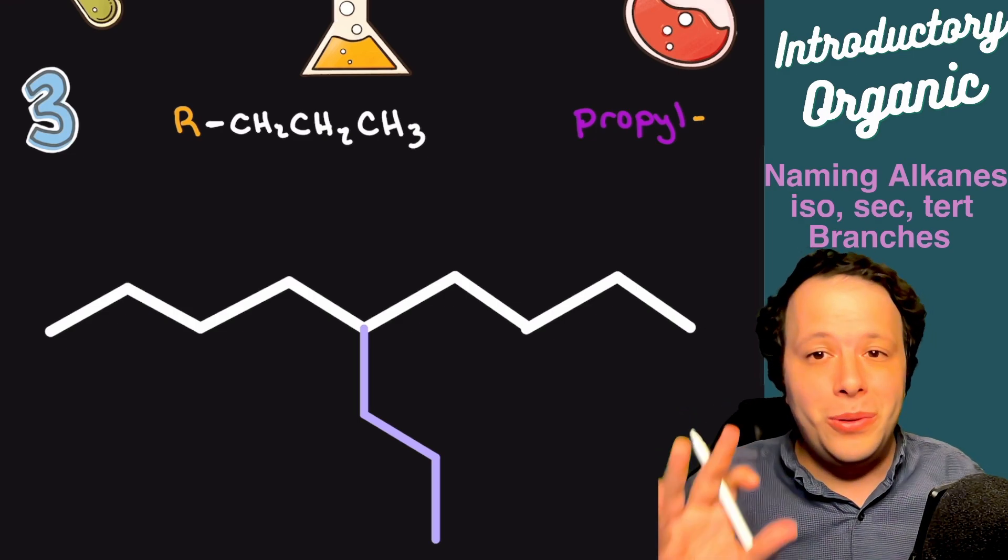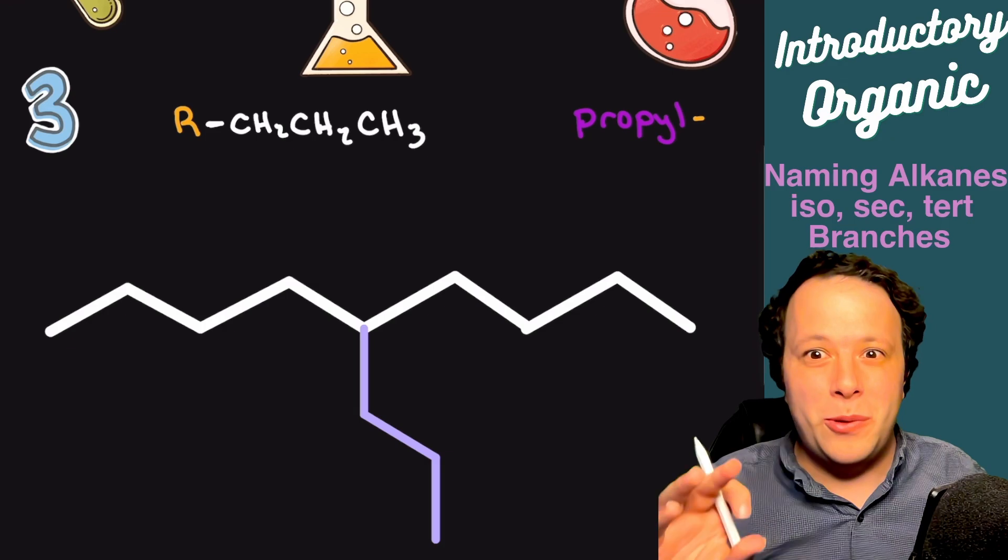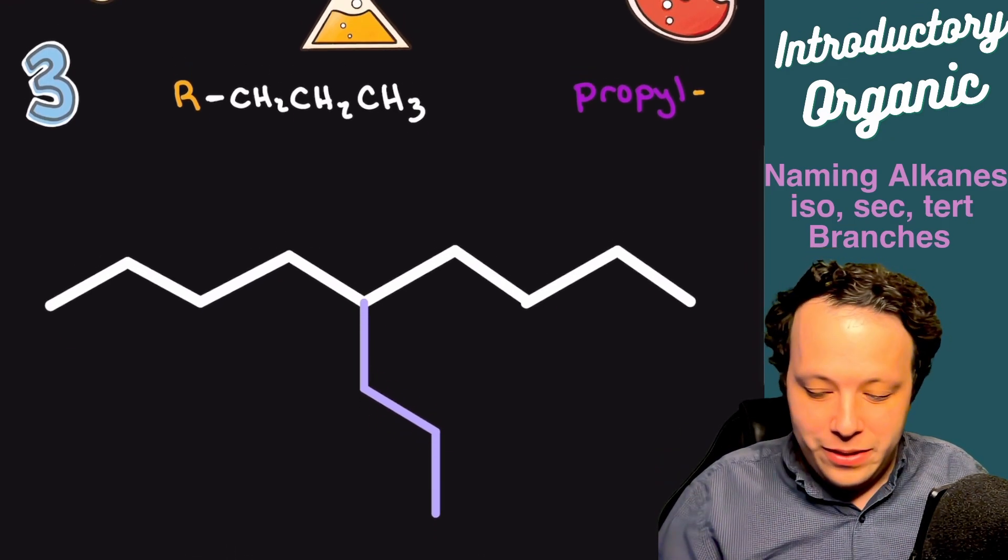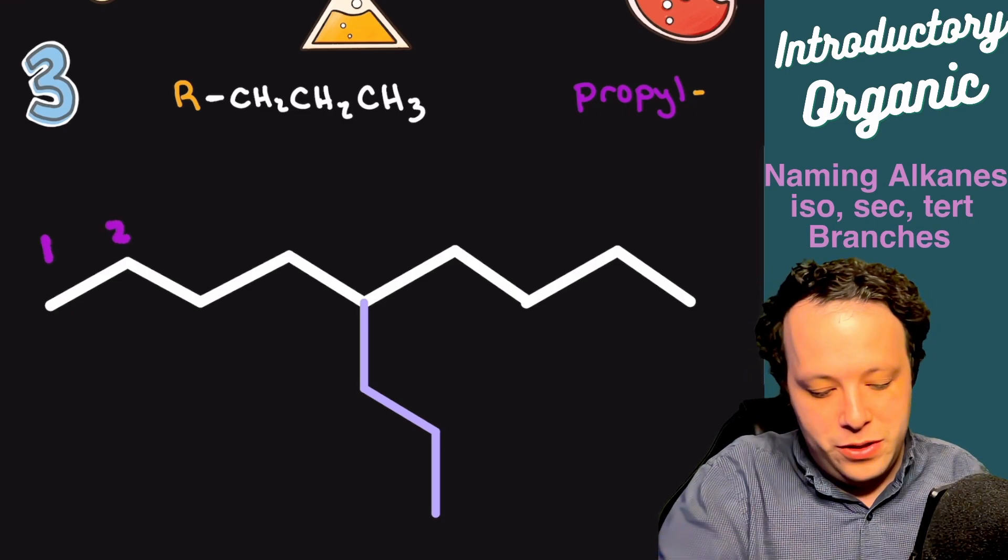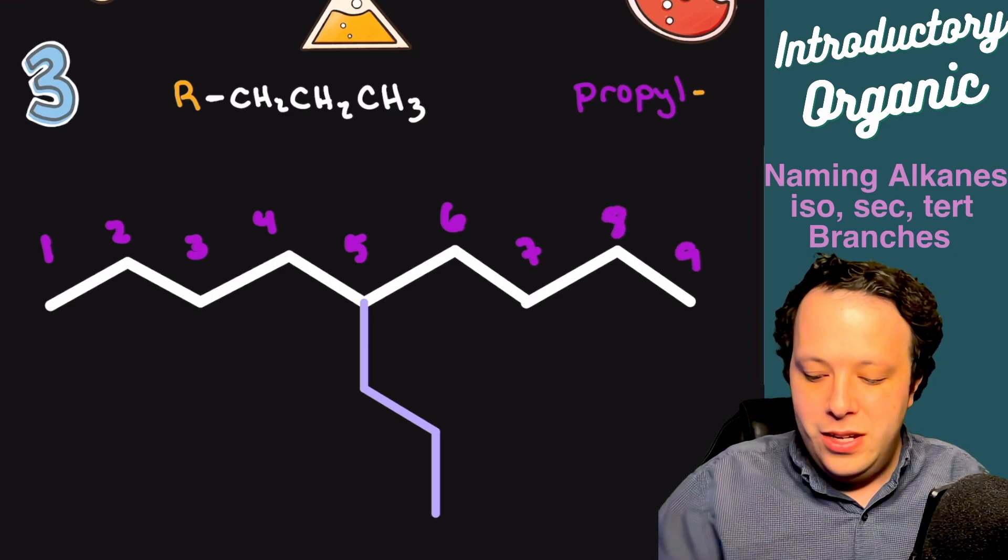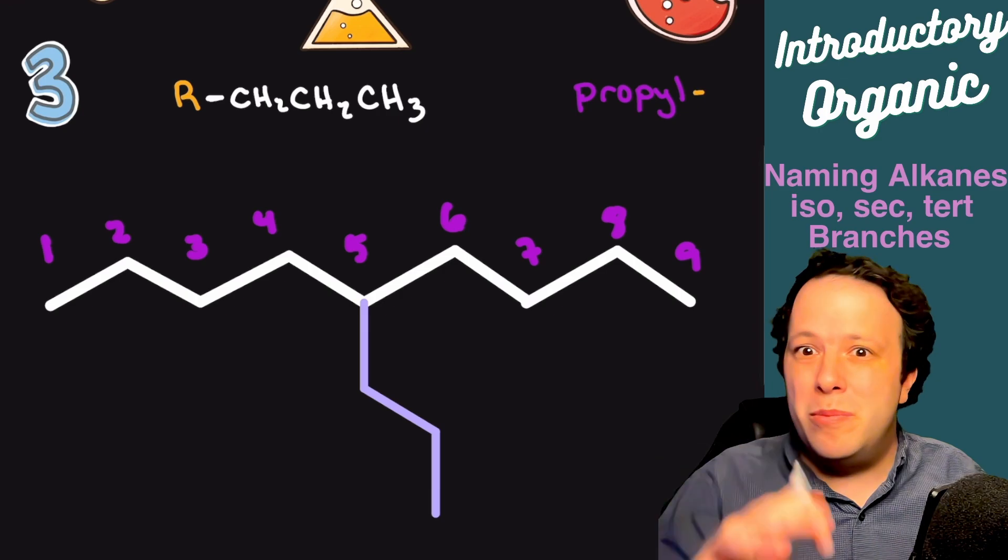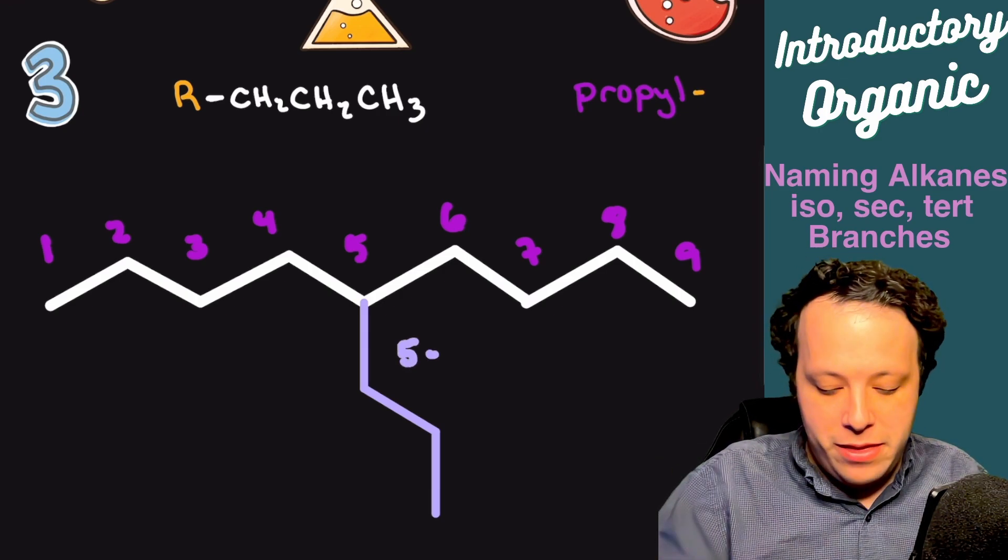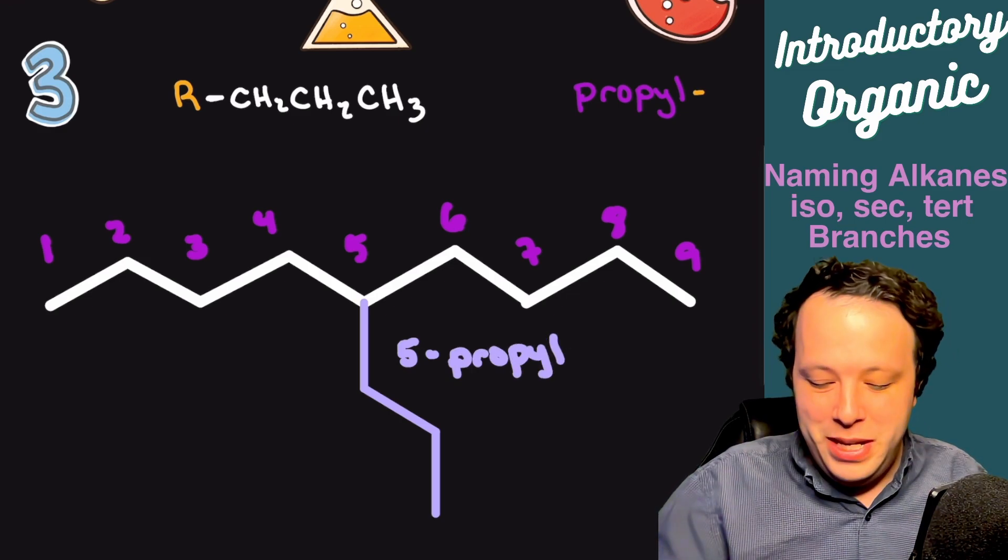Typically you only ever have them in the middle, and they tend to be even a little bit more rare, especially in terms of organic chemistry one and introductory chemistry. If I name this from the left, one, two, three, four, five, six, seven, eight, nine, this would be five-propyl nonane.